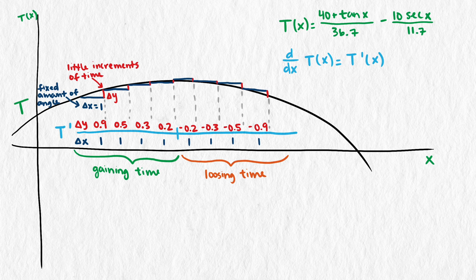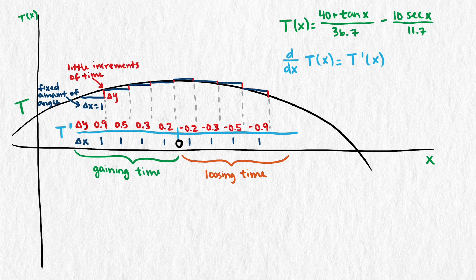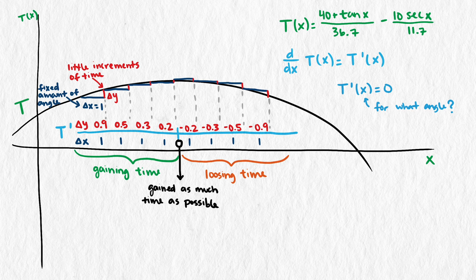So we want to find the angle the pedestrian would take when they have stopped gaining time and would start losing time if the pedestrian went at any larger angle. This will happen when the output of the derivative function shows a change from positive to negative, or in other words, when the derivative function has a value of zero. So we're looking for the angle that gives the derivative function an output of zero. This gives us the optimal angle because the pedestrian will have gained as much time as possible, and any greater angle would start to decrease the safety time from this maximum.